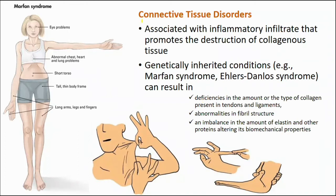The next comorbidity is connective tissue disorder, associated with inflammatory destruction of collagenous tissue where tissues get affected and sometimes destroyed. Most connective tissue disorders are genetically inherited. One example is Marfan syndrome, characterized by a tall and thin body frame, long arms, legs, and fingers, and eye, chest, heart, and lung problems. It results from deficiency in the amount of collagen present in tendons and ligaments, abnormalities in fibril structure, and imbalance in the amount of elastin.